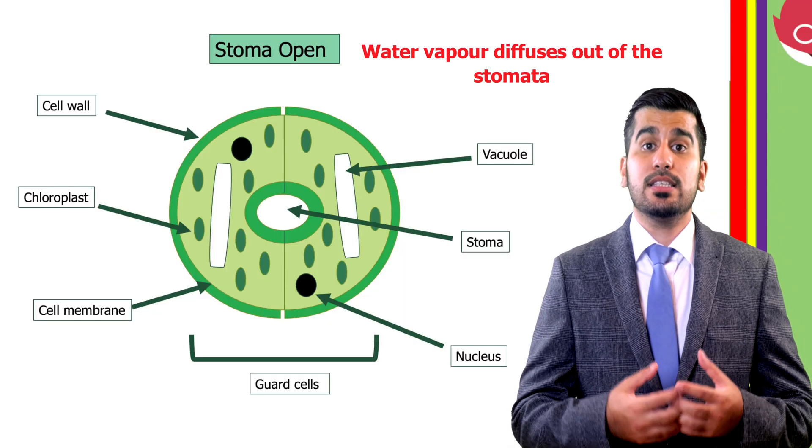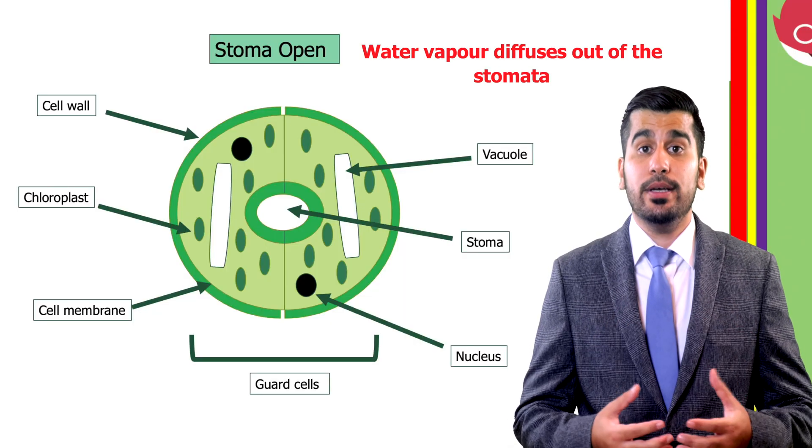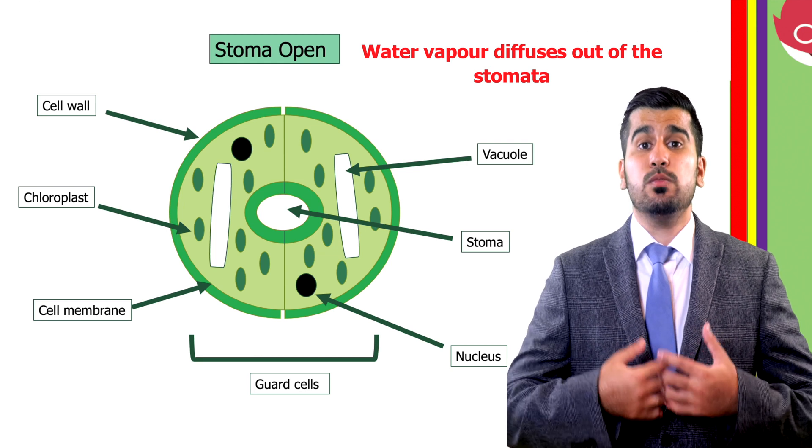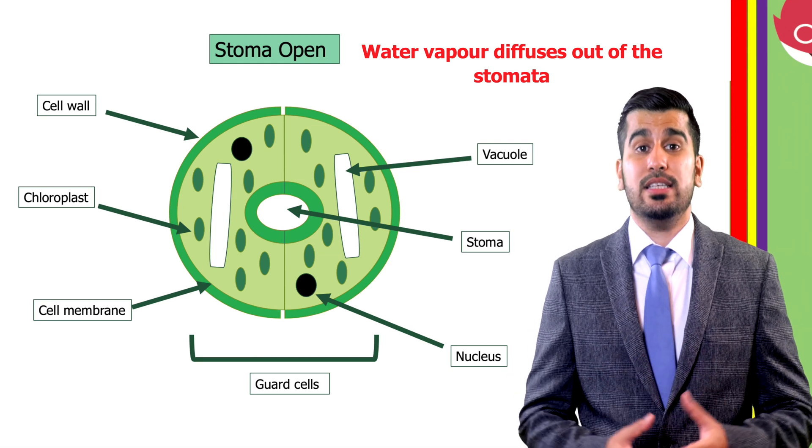Our third factor is humidity. If the humidity increases, the water content in the air increases. This reduces the concentration gradient and it reduces the rate of transpiration. Our final factor is light intensity. As light levels increase, so does the rate of photosynthesis. This causes the stomata to open to allow more carbon dioxide to enter. The resulting effect is more water is lost.